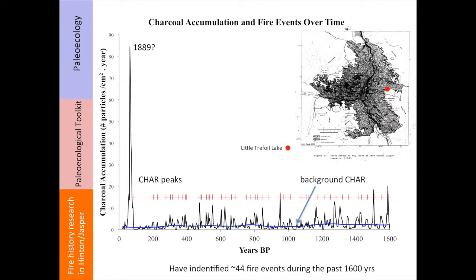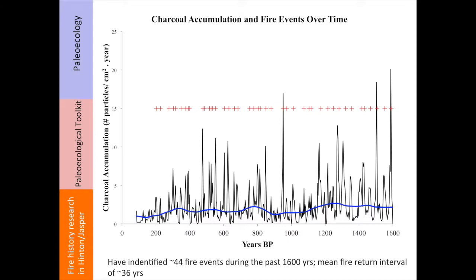So far, she's identified 44 fire events during the past 1,600 years. The year 1889 appears to be well represented with the largest peak we see in the fire record — it really dwarfs all the other peaks. If we remove that, it gives us a better perspective of what was going on prior to that fire. Again, 44 fire events probably represents a mean fire return interval of about 36 years, which is in surprisingly good agreement with some of the tree ring records we've been collecting.